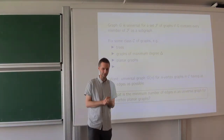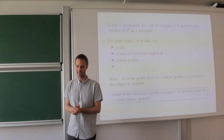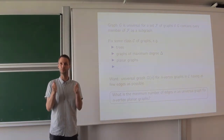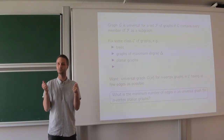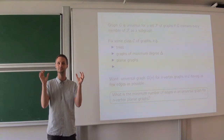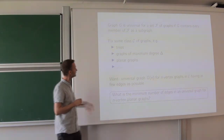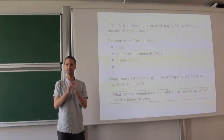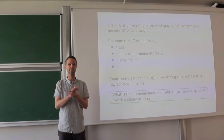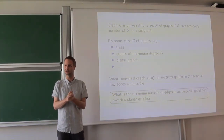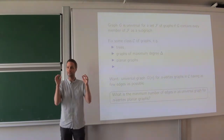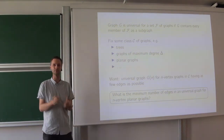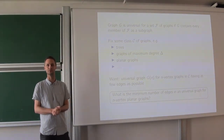The universal graph does not need to be in the class. The next question is: what's a good universal graph? Because obviously, since we care about the subgraph relation and we're looking at graphs on n vertices, we could always take the complete graph on n vertices — this is definitely universal for whatever set of graphs on n vertices you give me. But intuitively, this is not a very interesting or insightful universal graph. So we want to build one that is somehow good, and the way we measure quality is by counting the number of edges. We want to build a universal graph that has as few edges as possible.